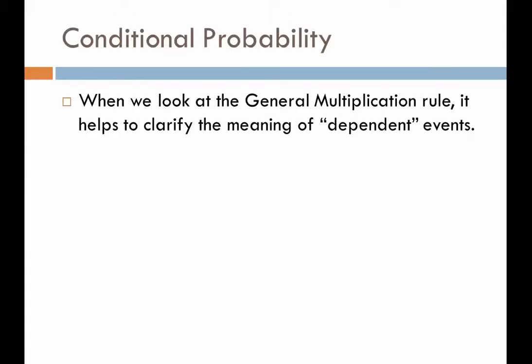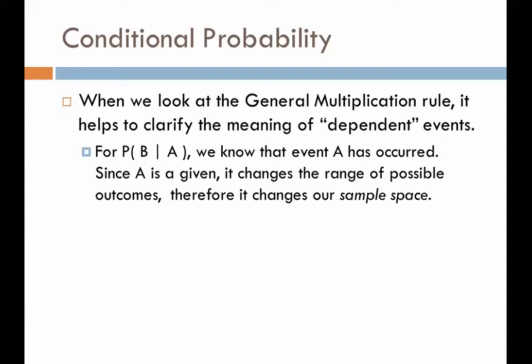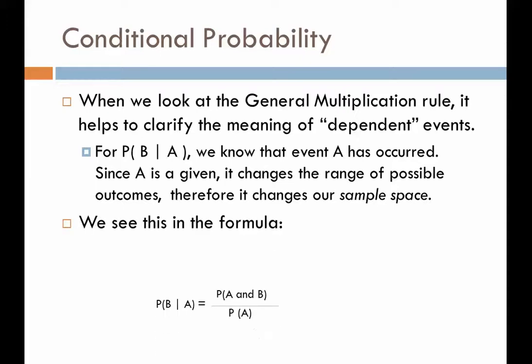When we look at the general multiplication rule, it helps us clarify the meaning of dependent events. For the probability of B given that A has occurred, we know that event A has occurred. Since A is a given, it changes our range of possible outcomes and therefore changes our sample space. We can see this in the formula — when we take the probability of B given A, we're only taking into consideration the outcomes of A, and we look at only where A and B intersect.